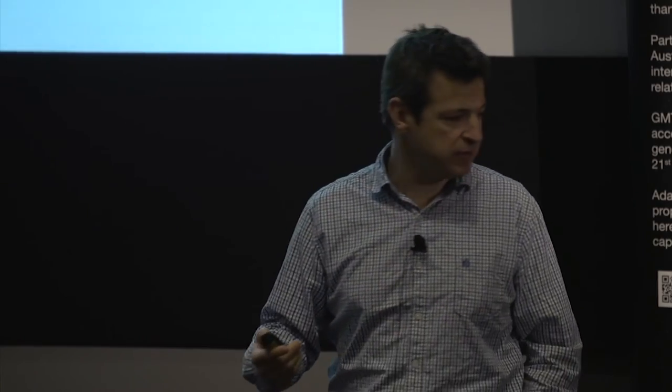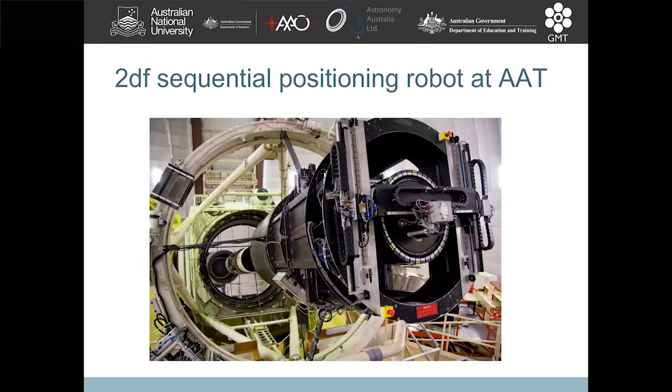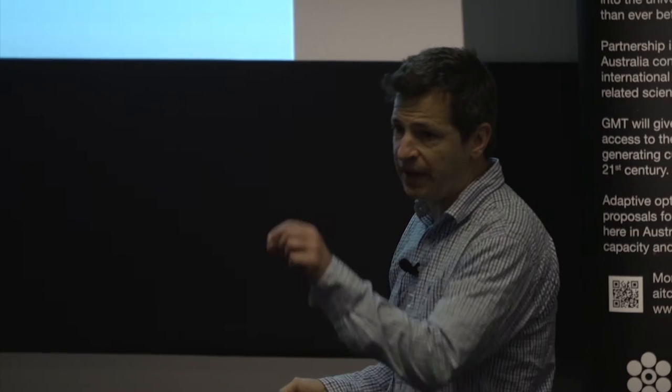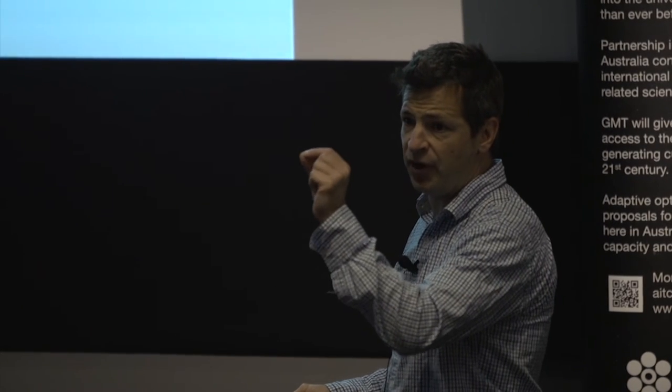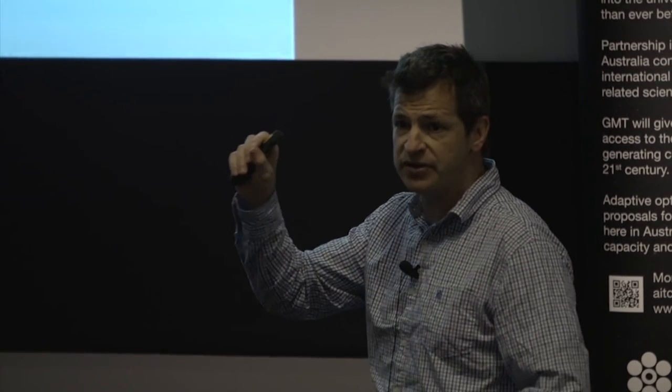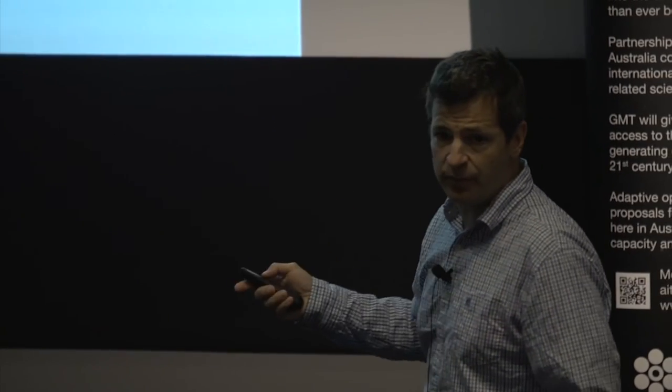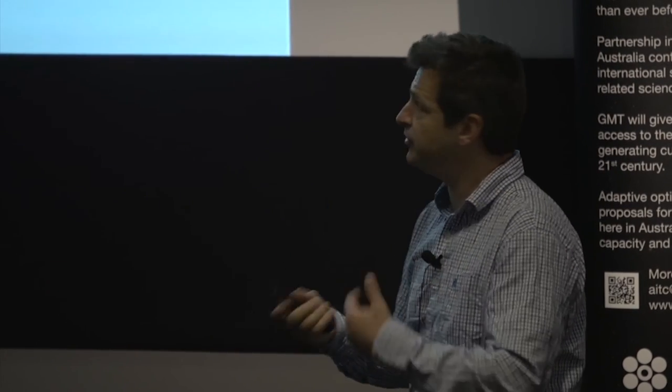To give you some reference of the current technology that we use to do this, here's a picture of the AAT, as Chris mentioned before. This is a four meter telescope up in Siding Spring, near Coonabarabran, northern New South Wales. Behind this we have a fiber positioning robot, and the job of this robot is to place hundreds of little fibers in the field of view, in the focal plate of the telescope, where we know there's going to be an object. We need to very precisely position many, many fibers to collect the light from many, many objects at the same time.